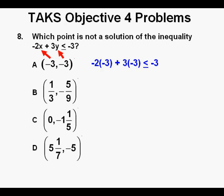So for answer A that becomes negative 2 times negative 3 plus 3 times negative 3. And that simplifies to 6 minus 9 is less than or equal to negative 3. Which further simplifies to negative 3 is less than or equal to negative 3. Is this a true statement? Yes, it is true because negative 3 equals negative 3.